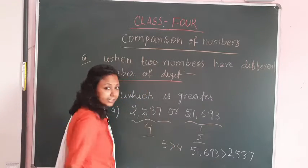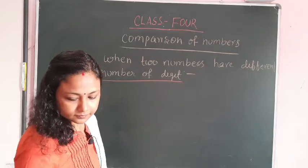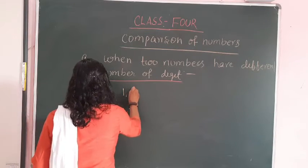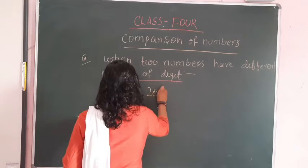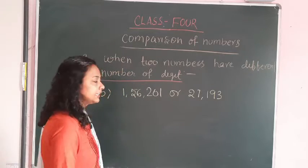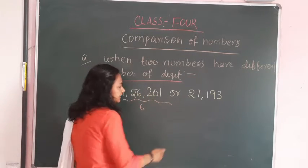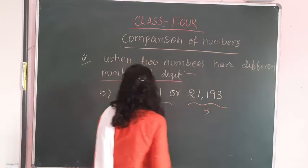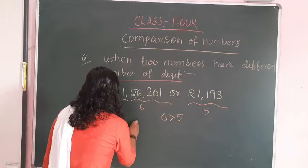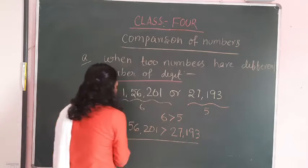Take another example: 156201 or 27193. 156201 has six digits and 27193 has five digits. Six is always greater than five, so 156201 is greater than 27193. That is the exact answer.